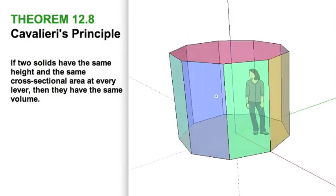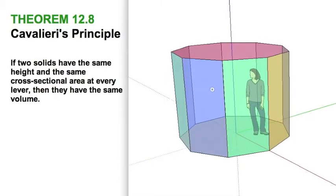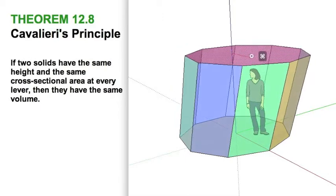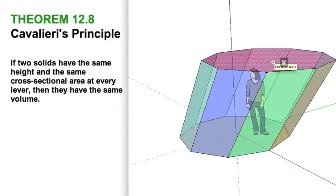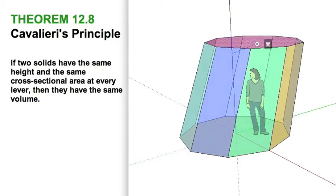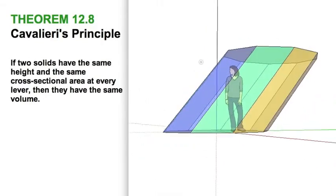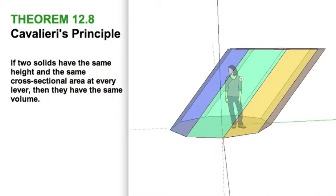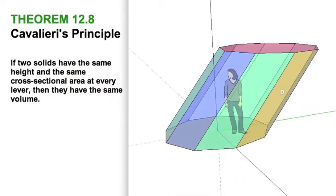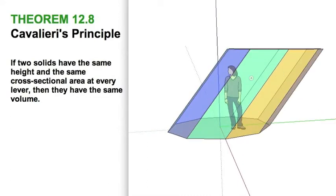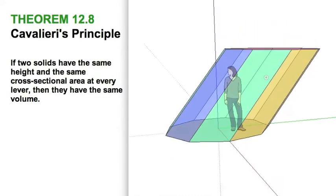Here we have our nonagon extruded into a right prism. Now we're going to do something a little different — take this figure and move it, just like we did with parallelograms in 2D. We're going to shear it, maybe move it along the green axis. This gives us an oblique prism, which has the exact same volume as before we sheared it, as long as we kept the vertical distance between the bases constant. That is Cavalieri's Principle.